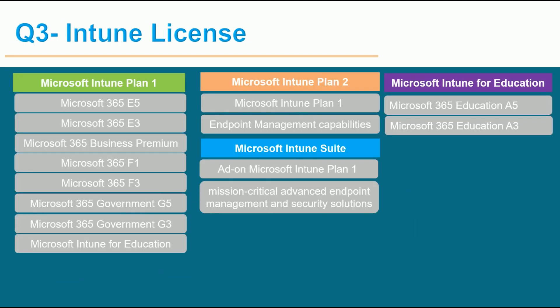Regarding licensing in Intune, there are three to four types of license categories. Microsoft Intune Plan 1 can be obtained when you purchase Microsoft E5, E3, Microsoft 365 Business Premium, Microsoft 365 F1, F3, Microsoft 365 Government G3, G5, or Education licenses. If you need Intune, you can purchase any one of these licenses. Intune Plan 2 covers all features from Plan 1 plus additional endpoint management capabilities.